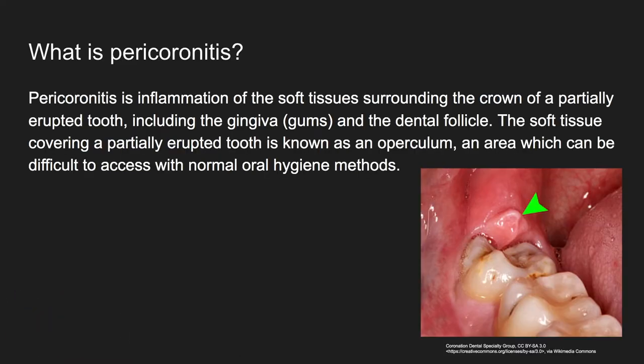So what is pericoronitis? Essentially it's the inflammation of the soft tissues surrounding the crown of a partially erupted tooth, including the gingivae and the dental follicle. The soft tissue covering a partially erupted tooth is known as an operculum, and it creates an area which can be difficult to access with normal oral hygiene methods.